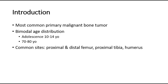Some of the common sites for osteosarcoma to occur are the proximal and distal femur, proximal tibia, and humerus — where the majority of the long bone growth occurs. These are the common sites for osteosarcoma.